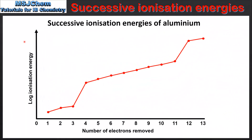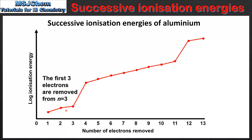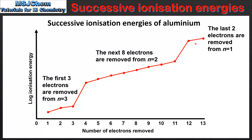Next we look at the graph of the successive ionization energies of aluminium. The first 3 electrons are removed from the n=3 energy level. The next 8 electrons are removed from the n=2 energy level. And the last 2 electrons are removed from the n=1 energy level. Again we can see that the successive ionization energies show an increase, as electrons are removed from an increasingly positive ion.